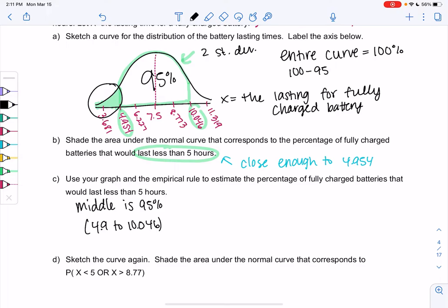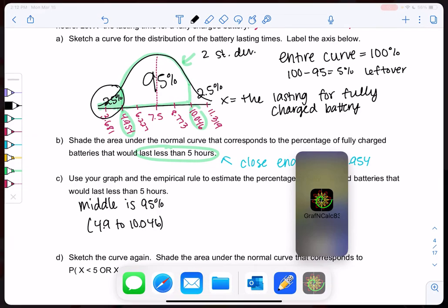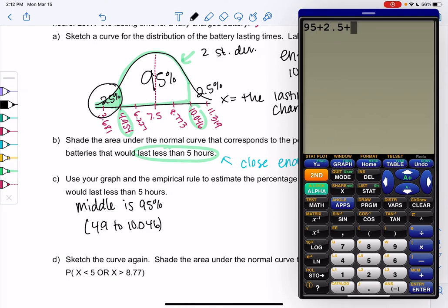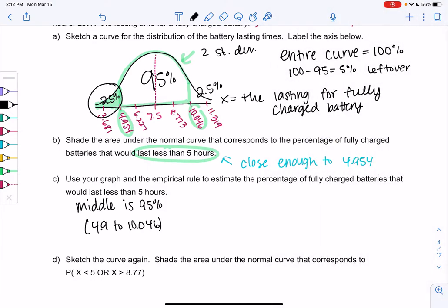So we have 5% left over. And then that doesn't mean the left side is 5%. It means each piece gets half of that. So 2.5 and 2.5. So if I wanted to check my work, I would take everything that I labeled and make sure it adds up to 100. And it does. So the whole curve is 100. We're only interested in the piece that's less than 5 or 4.9. So that tells us that 2.5% would last less than 5 hours, approximately. This is an estimate.